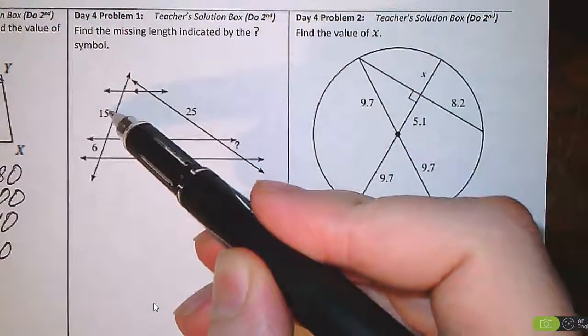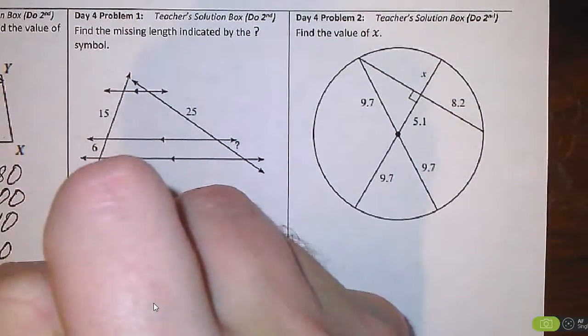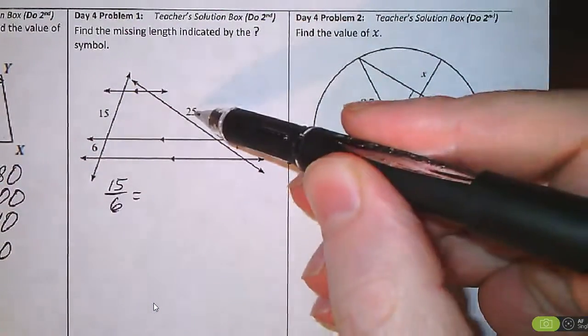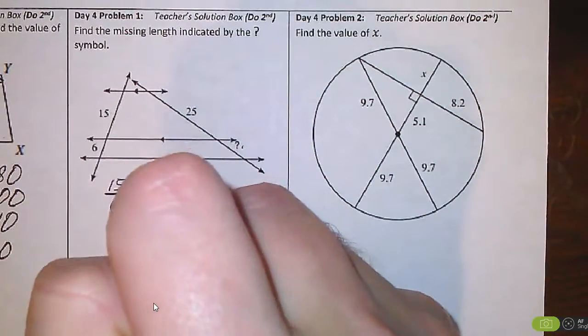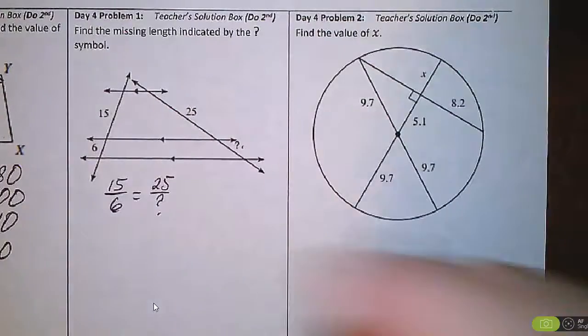We can take the 15 over the 6 and the 25 over the question mark. Now let's use cross-multiply.